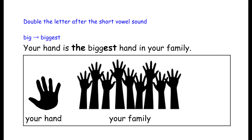Remember, we need to double the letter after the short vowel sound. So 'big' has one vowel — 'ih' — it is a short vowel sound. So we need two G's and add E-S-T. Your hand is the biggest hand in your family.